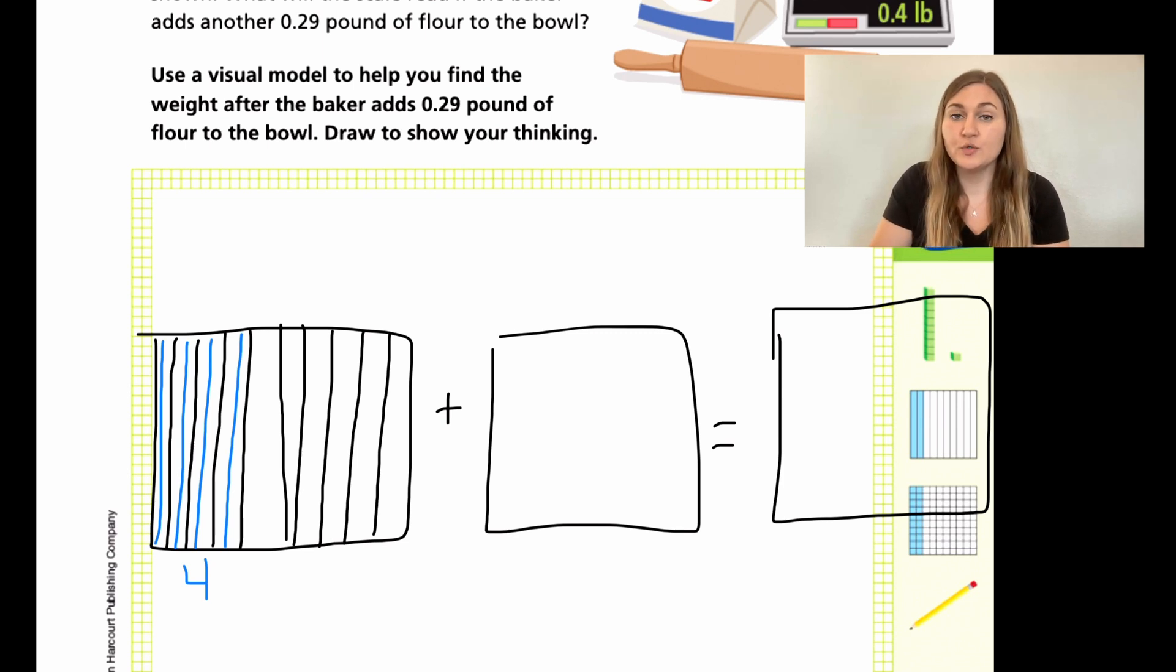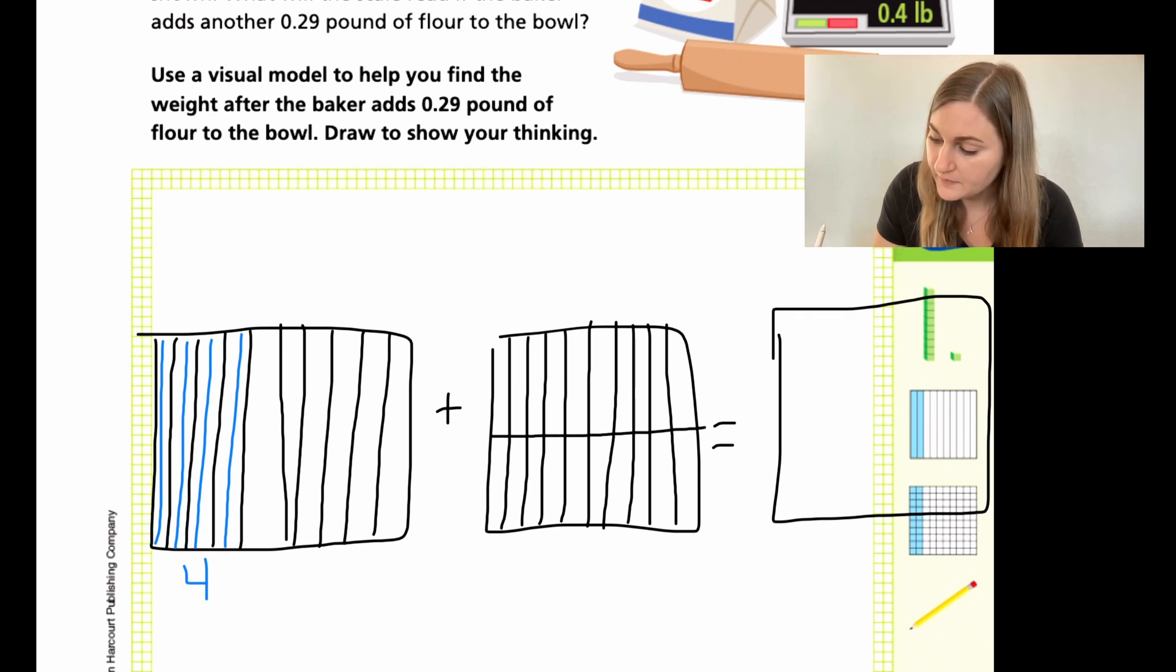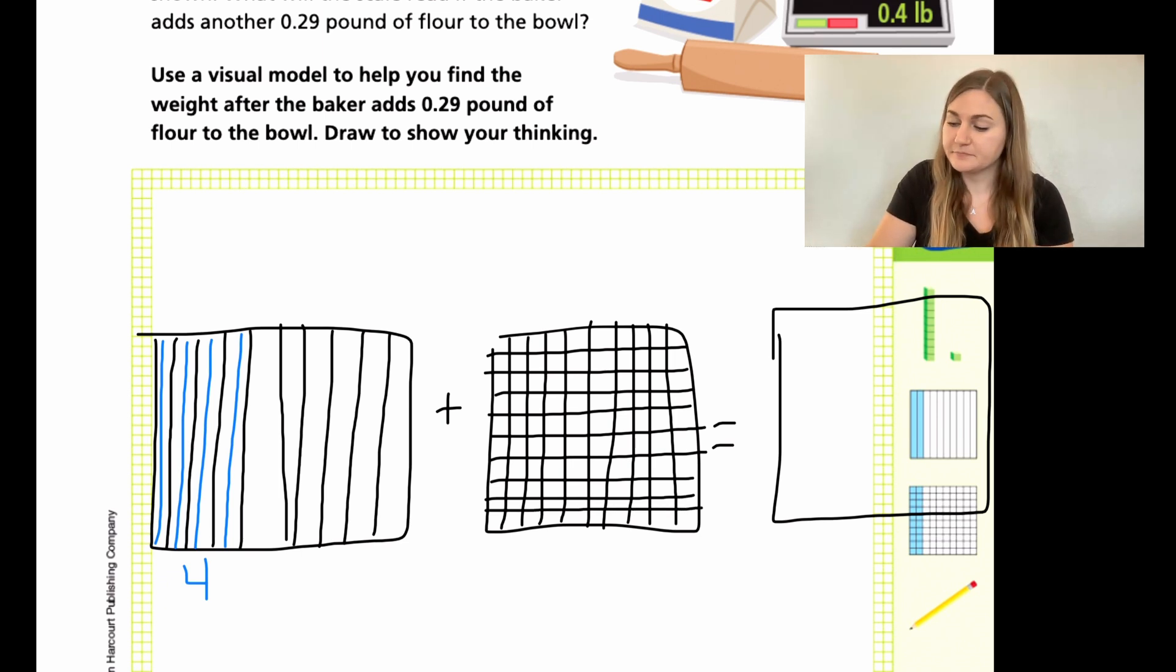Alright, then it's saying I'm adding 0.29 or 29 hundredths. Here's where modeling gets a little bit difficult. I am going to have to break up these next two boxes into a hundred pieces. So it's ten just like I did, but it's ten going the other way too. So it is going to take some time to set up, but it's so important to see visually what's happening. So give me a second while I draw my hundredths here. Alright, there's ten that we're going to go the other way.